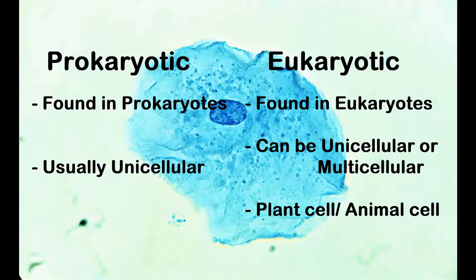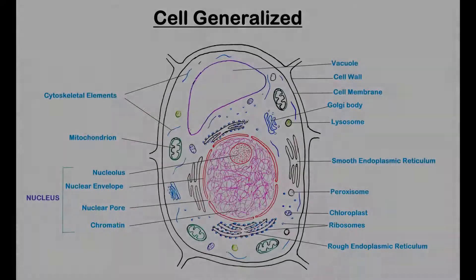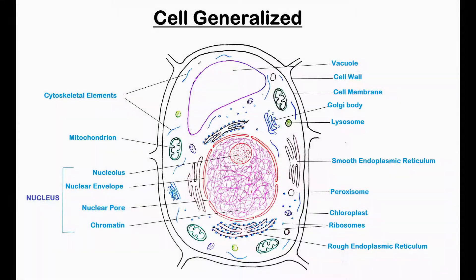The eukaryotic cells found in plants are known as plant cells while those found in animals are known as animal cells. A typical eukaryotic cell is usually a microscopic structure composed of a cell membrane with or without a cell wall that encloses a protoplasm. Embedded in the protoplasm are numerous subcellular structures called cell organelles along with a centrally located membrane-bound nucleus.